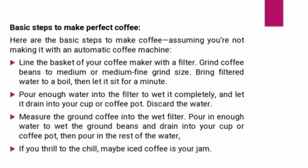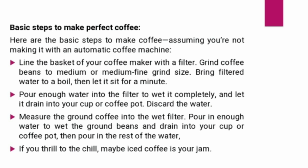Basic steps to make perfect coffee, assuming you're not using an automatic coffee machine. First, line the basket of your coffee maker with a filter, grind coffee beans to medium or medium-fine size, bring filtered water to a boil, then let it sit for a minute. Second, pour enough water into the filter to wet it completely, let it drain into your cup or coffee pot, then discard the water. Third, measure the ground coffee into the wet filter, pour in enough water to wet the ground beans, drain into your cup or coffee pot, then pour in the rest of the water.